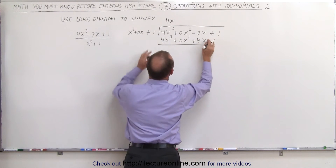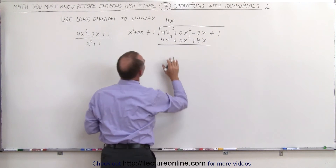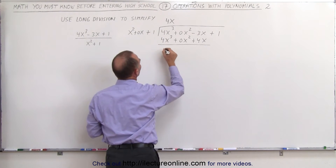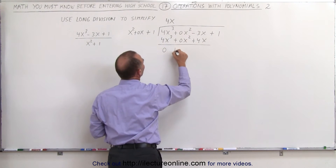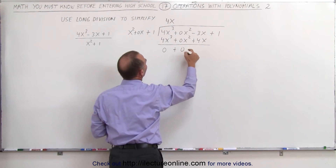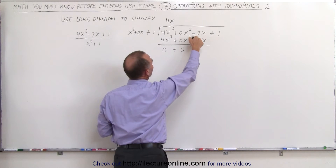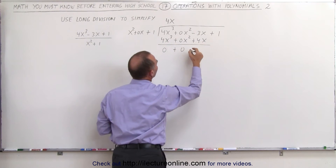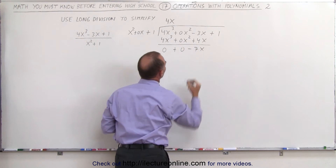Now we subtract this polynomial from this polynomial. This minus this gives us 0. This minus this gives us 0. And minus 3x minus 4x gives us minus 7x.